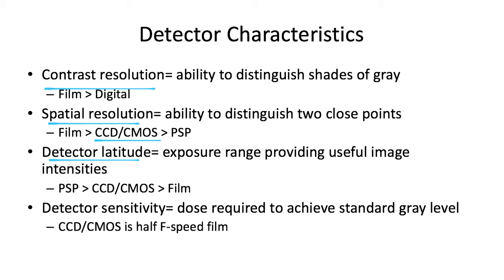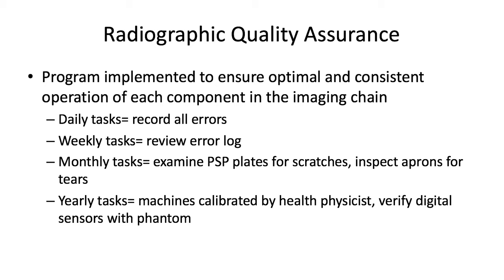Detector latitude is basically how forgiving a receptor is — even if you underexpose or overexpose, a wide latitude can still produce a diagnostic quality image. PSP is actually the best here, then CCD or CMOS, and then film. For detector sensitivity — the dose required to achieve a standard gray level — CCD or CMOS requires half the dose of F-speed film. Since F-speed is one of the fastest analog films available, that's still two times the radiation dose compared to a CCD or CMOS sensor, showing how much less radiation digital requires.